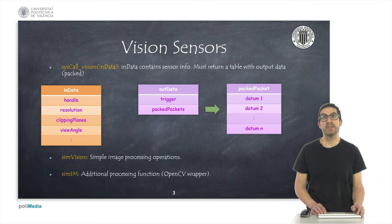This function provides sensor data as input argument in a variable INDATA, and it must return a table with the compressed or packed output information. By default, CoppeliaSim returns a set of 15 values with information regarding the minimum, maximum and average values detected in the image. But we can return any other additional information if we properly pack this information.